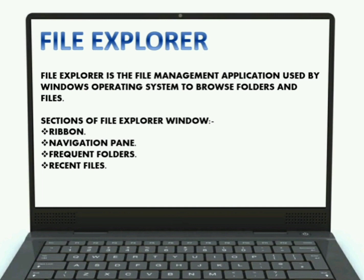The main way to access the file explorer is by clicking the folder icon in the taskbar. After clicking the icon, the file explorer window will open. Initially, the file explorer window is comprised of the ribbon, navigation pane, frequent folders, and recent files.